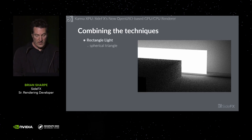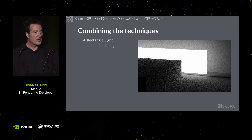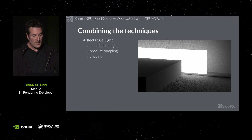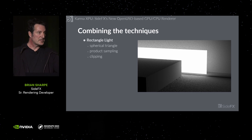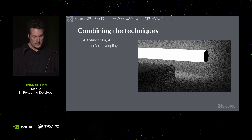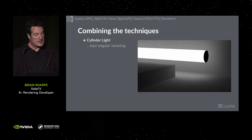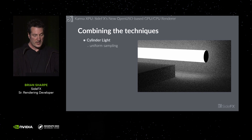Here are some images showing the combining of these techniques — apologies for the contrived scene. First a rectangle using standard spherical triangle sampling, then adding product sampling, then with spherical triangle sampling, product sampling, and clipping — notice the box on the left improved a lot. And here are cylinder lights with standard uniform sampling, then equi-angular sampling, then equi-angular sampling with clipping — again the box on the left improves. So: uniform sampling, equi-angular sampling, equi-angular sampling with clipping.